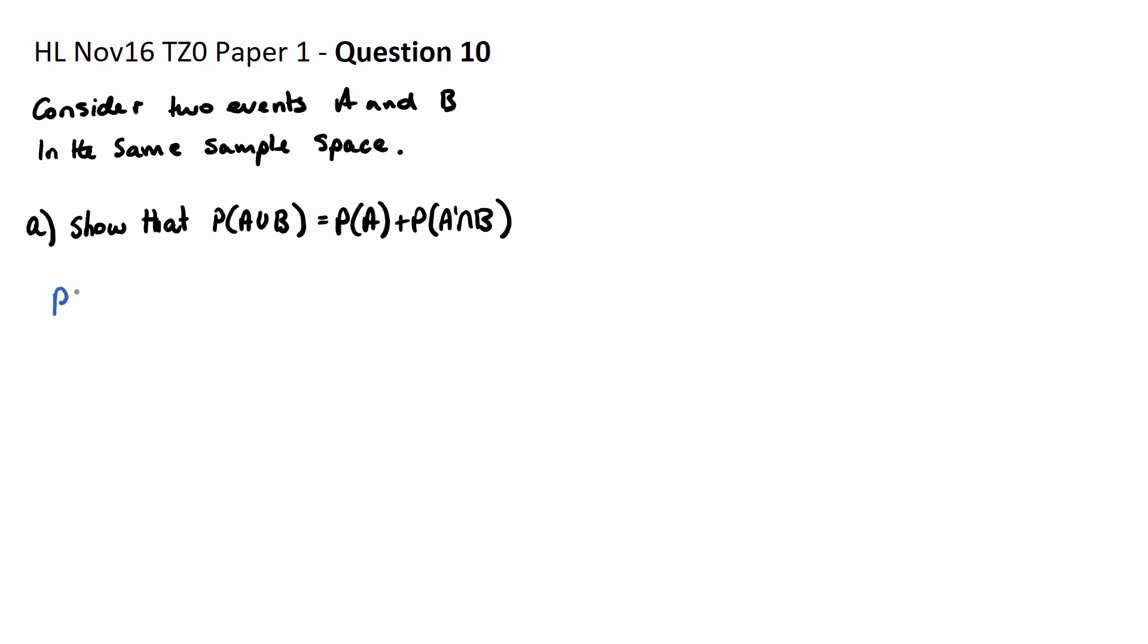So I'm going to do a very similar method to method 1. The probability of A union B, we know this is typically the combined events formula: probability of A plus the probability of B minus the intersection A and B.